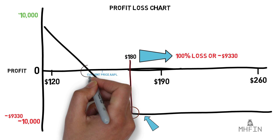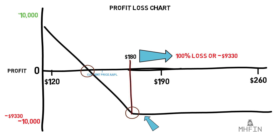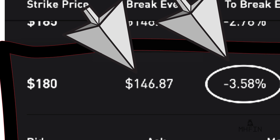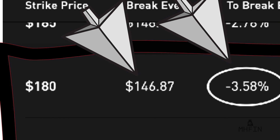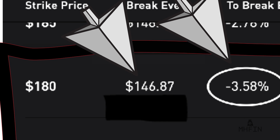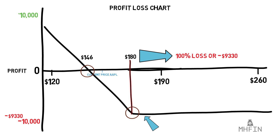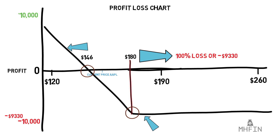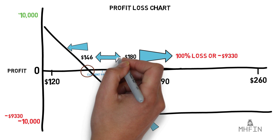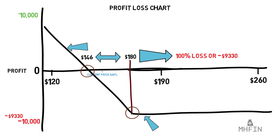The next important point is the breakeven, where the line crosses the x-axis. This point at $146 was displayed in our options details page. It represents the point at which Mike will break even with his investment. In simple terms, Mike will make a profit if Apple finishes underneath $146 on the date of expiration, and will lose money if Apple finishes above $146. The space between $146 and $180 represents the partial loss zone, meaning if Apple finishes between $146 and $180, Mike will incur anywhere from a 0 to 100% loss — closer to $180 meaning closer to a 100% loss, and closer to $146 meaning closer to a 0% loss.